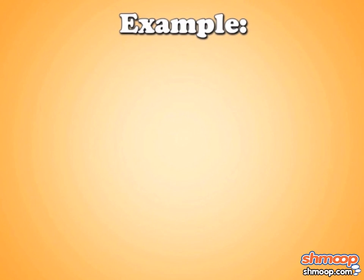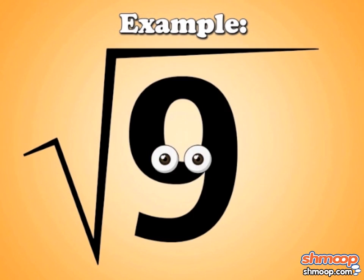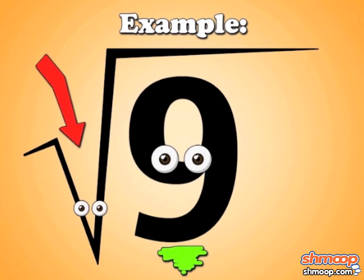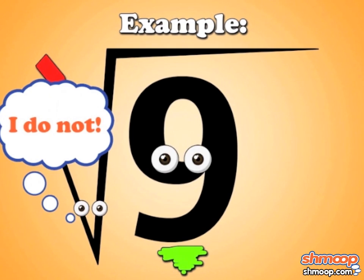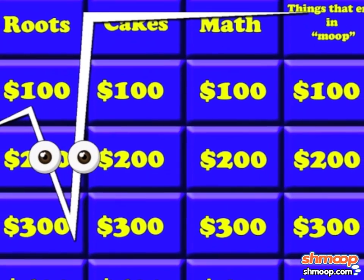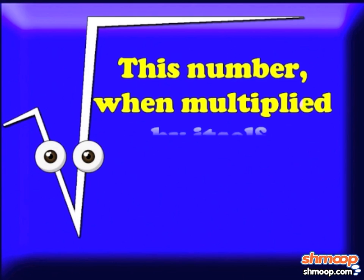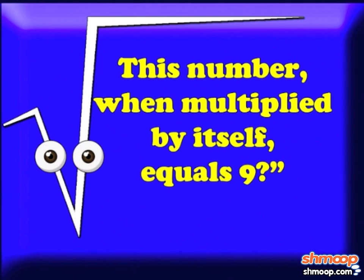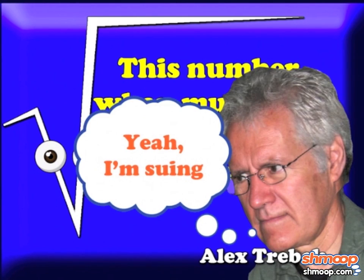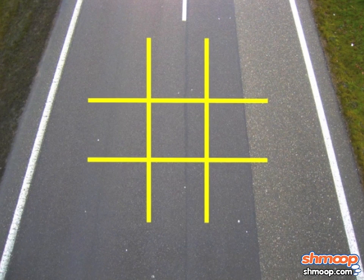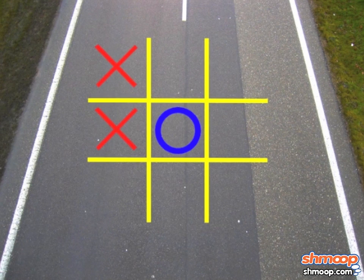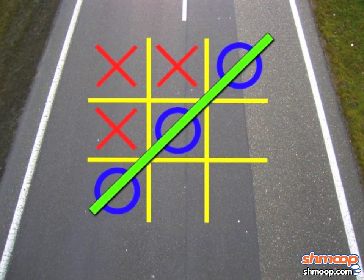Let's look at an example. Here's the square root of nine — it's just the number nine inside of a funny-looking symbol that resembles a checkmark. Here's what this symbol is asking: what number, when multiplied by itself, equals nine? If you've ever drawn a tic-tac-toe board, you should know that the answer is three.